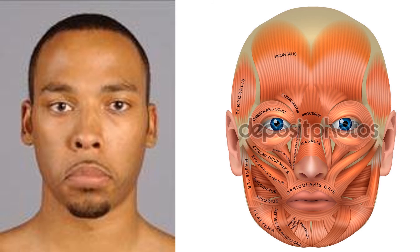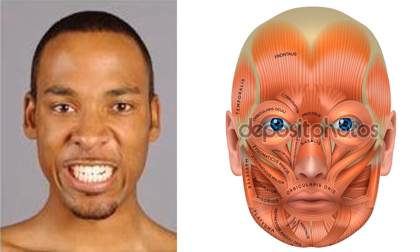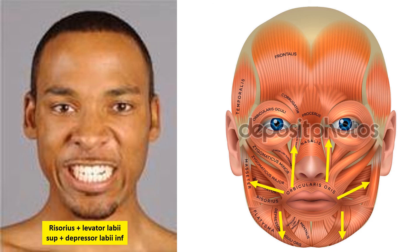This is a look where the lower lip has been pulled down, done by a muscle called the depressor anguli oris. The two angles of the mouth are pulled down. When this person was asked to show his teeth or smile, he is using more than one muscle — the levator labii superioris, the risorius, and the depressor anguli inferioris — so it is a combination of a group of muscles.